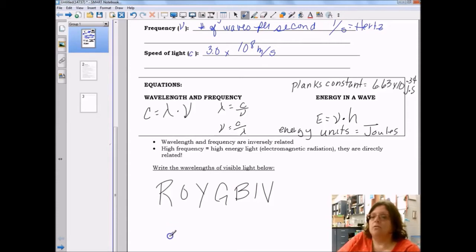Red, orange, yellow, green, blue, indigo, violet. They range from about 700 nanometers all the way down to about 400 nanometers in length. And remember that one nanometer is one billionth of a meter.